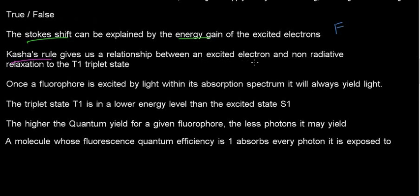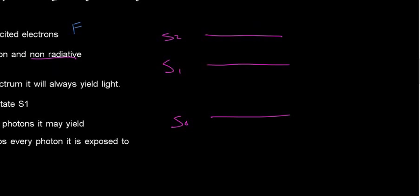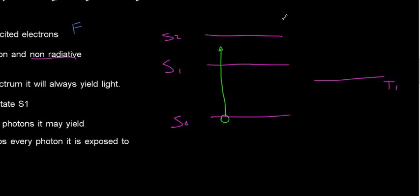Kasha's rule gives us a relationship between an excited electron and non-radiative relaxation to the T1 triplet state. As a quick revision: if these are my energy states and this is the triplet state, Kasha's rule says that if I have an electron excited here, it's going to rapidly vibrate and rotate to the stable S1, the first stable excited state. It doesn't say anything about rotating and vibrating to the triplet state.